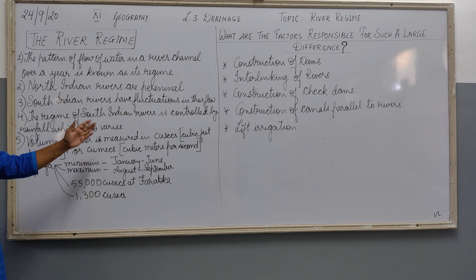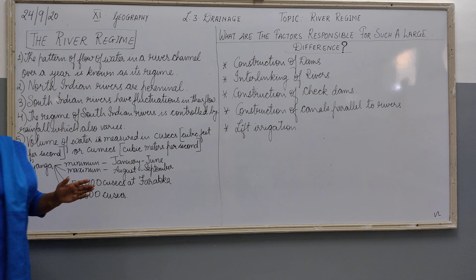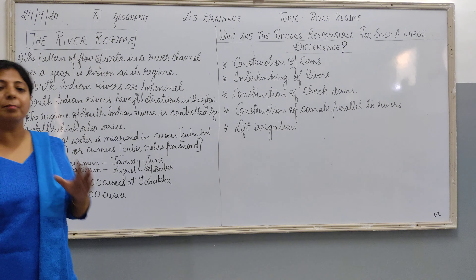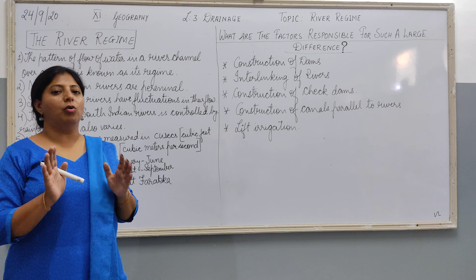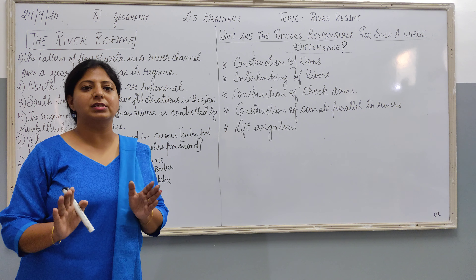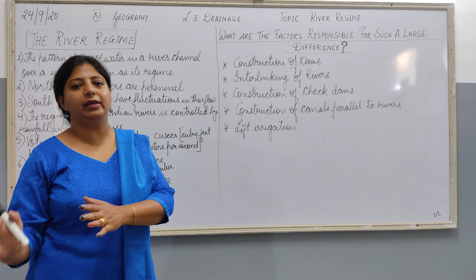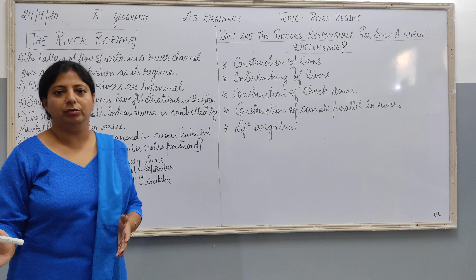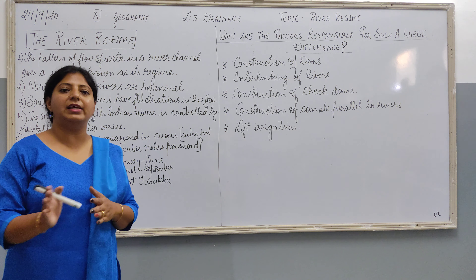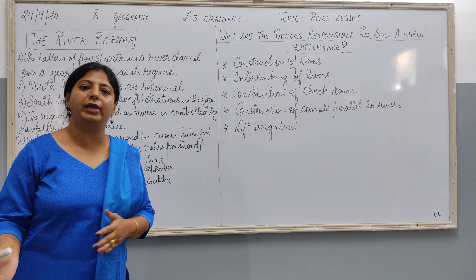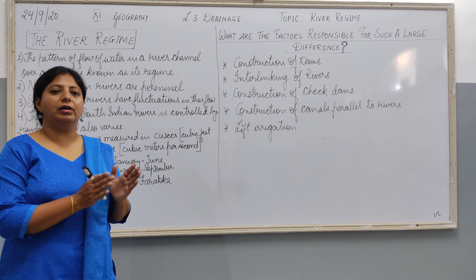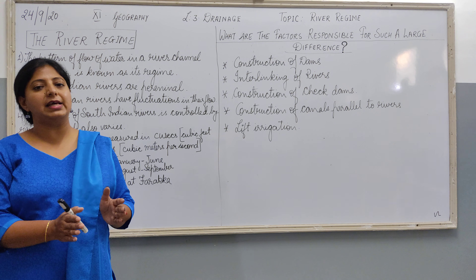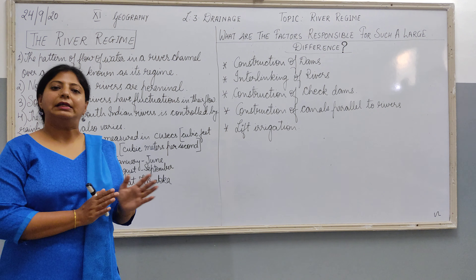The regime of South Indian rivers is controlled by rainfall, which also varies. Some parts of South India, like Tamil Nadu, get very little rainfall, and that too mostly in winters. So if the rainfall is less, the water volume will also be less.